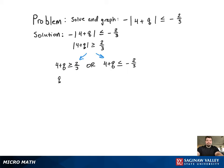Now arbitrarily solving for the left-hand inequality, we're going to subtract 4 and get Q greater than or equal to negative 10 thirds. Now subtract 4 again to get Q less than or equal to negative 14 thirds.